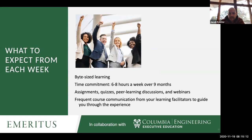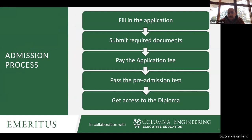To get into the course: fill out the application and submit it, then pay the application fee. You'll receive an email from Emeritus including information about a short pre-admission screening test. You'll have a couple of opportunities to pass it — it's a high-level review of statistics, a little calculus, and related math. Once you pass, you're in. It's really just to make sure this is the right place for you.